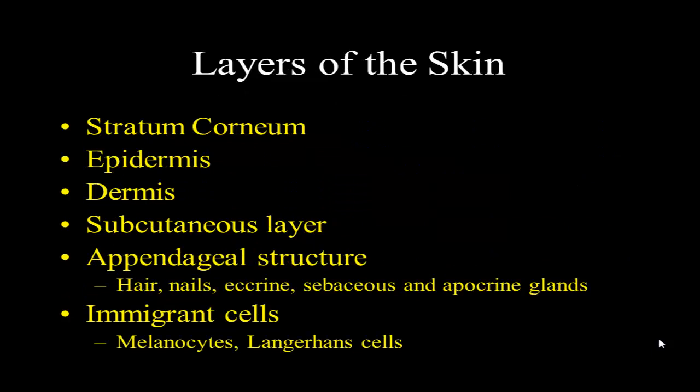I think it's helpful to review how the skin is made up. You've got the dead outer layer, which is the stratum corneum. You've got the epidermis, which is a viable layer of keratinocytes that in a very organized manner give rise to the stratum corneum. You have the support structure of the dermis — the tough collagen underneath has all the blood vessels and nerves running up. Then you have the subcutaneous fat layer, which actually increases with age. And then you have appendageal structures: hair, nails, eccrine, sebaceous, and apocrine glands.